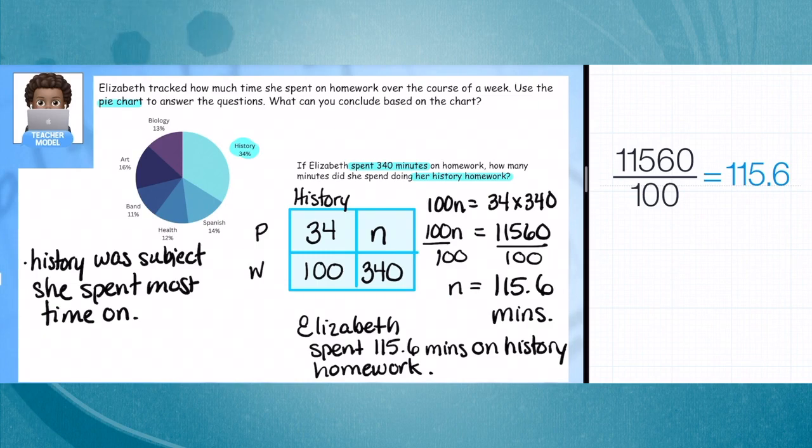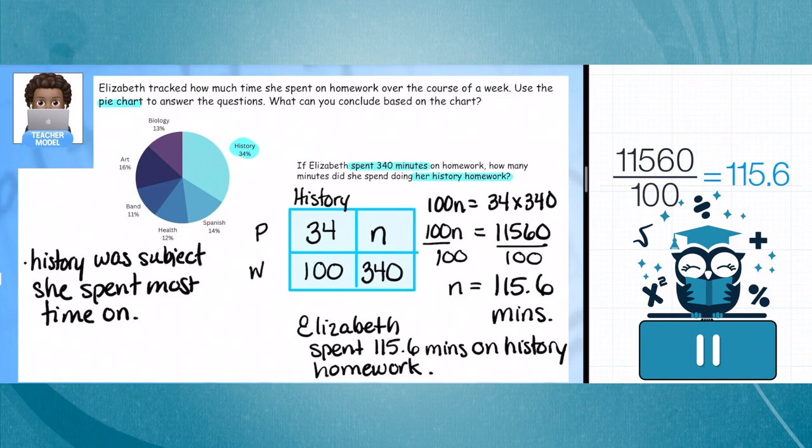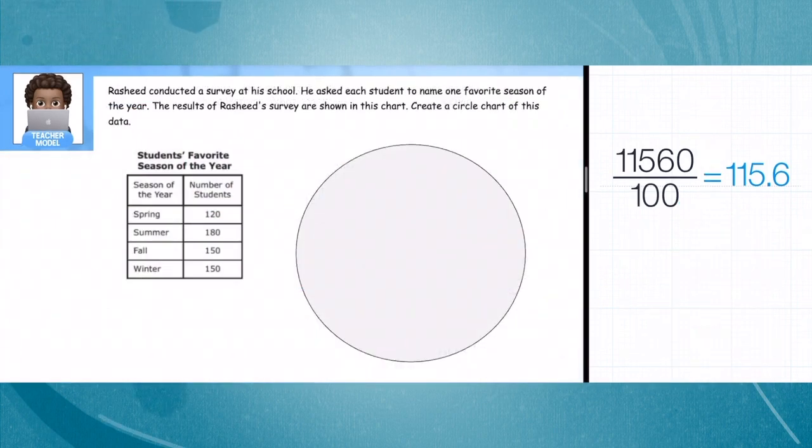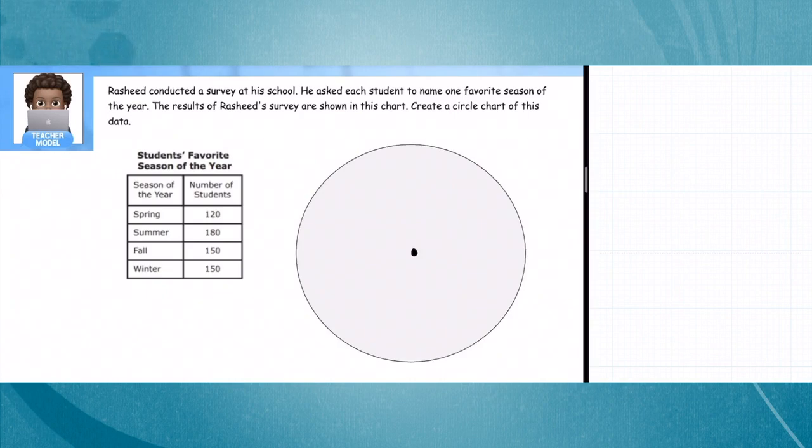Now we're going to try drawing a pie chart. The tough part with this is we're going to have to use some of our fraction knowledge, and it might not be perfect, and that's okay. We're going to need to know the percentages for each of these numbers. Rashid conducted a survey at school. He asked each student to name one favorite season of the year. The results of Rashid's survey are shown in this chart. Create a circle chart of his data.